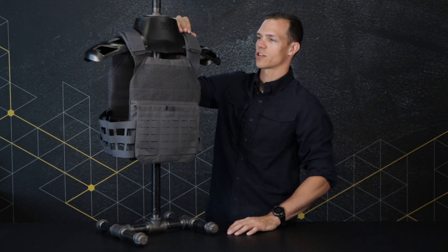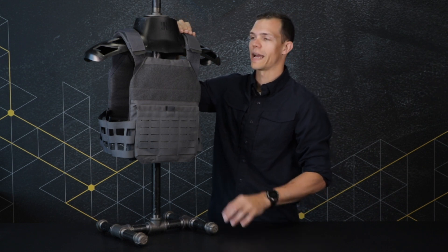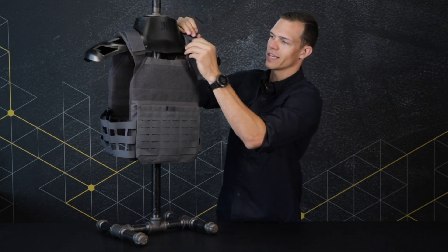So starting from the top, the Phalanx actually has a removable shoulder pad with hook and loop. You can remove it very easily.